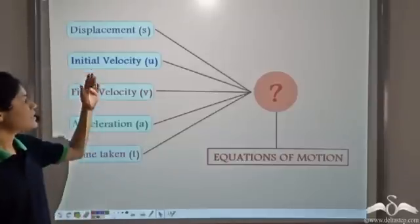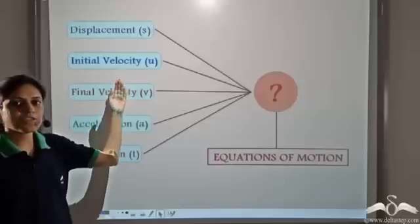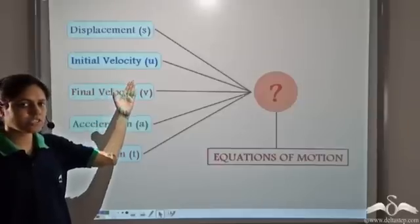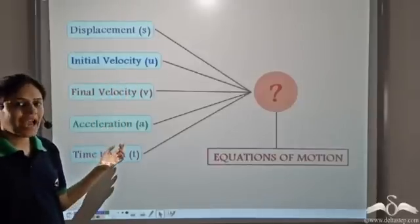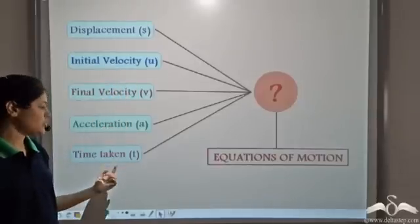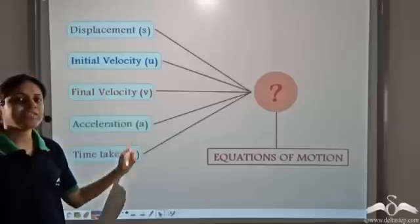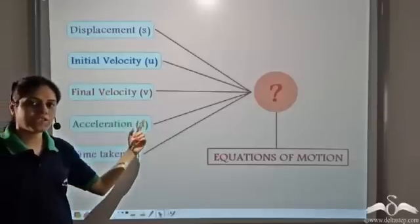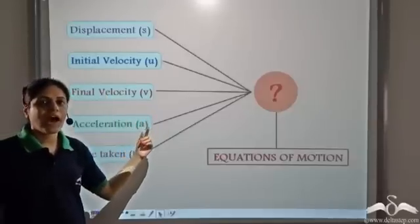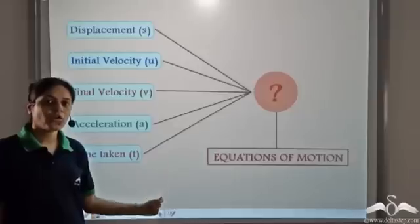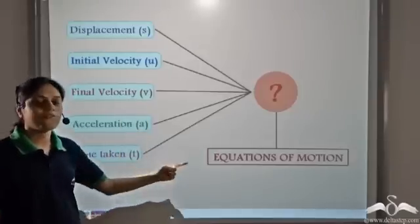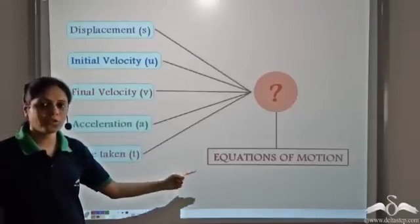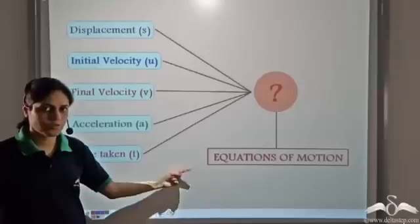We know that displacement, initial velocity, final velocity, acceleration, and time taken are all interrelated, and in order to determine the nature of relationship between these terms, we derive the equation of motion.